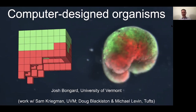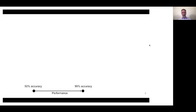Michael runs the Allen Discovery Center at Tufts University. This project is 50% computational and 50% biological, so given the audience I will focus most of my talk today on the computational aspect of CDOs. I will talk a little bit about the biology, but not too much simply because I will rapidly exhaust my knowledge there. To situate computer-designed organisms, I want to use a geometric metaphor. Imagine a one-dimensional line segment where we can represent agents, robots, and the algorithms that train them as embeddings.